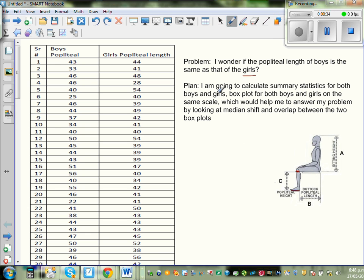So this is my plan. I'm going to calculate summary statistics for both boys and girls, draw box plots for both boys and girls on the same scale which would help me to answer my question by looking at the median shift and overlap between the two box plots. That will help me to decide whether boys and girls have the same length or are different.